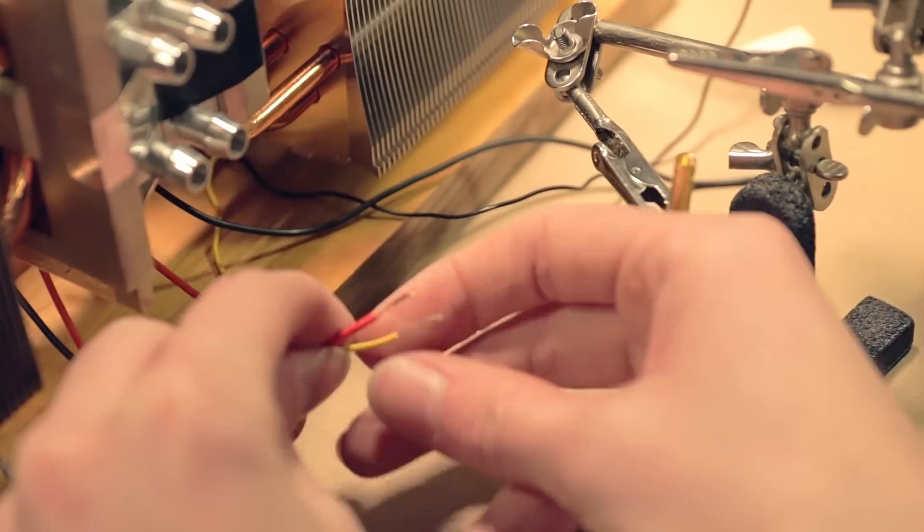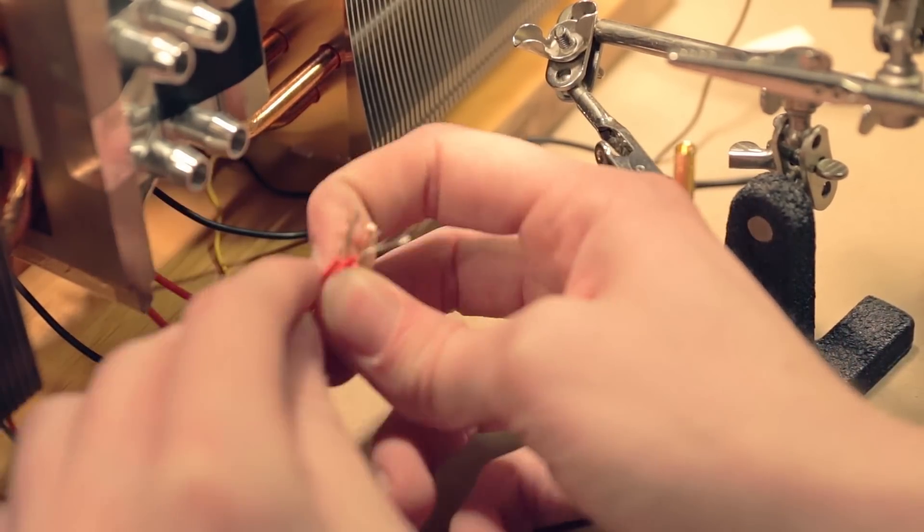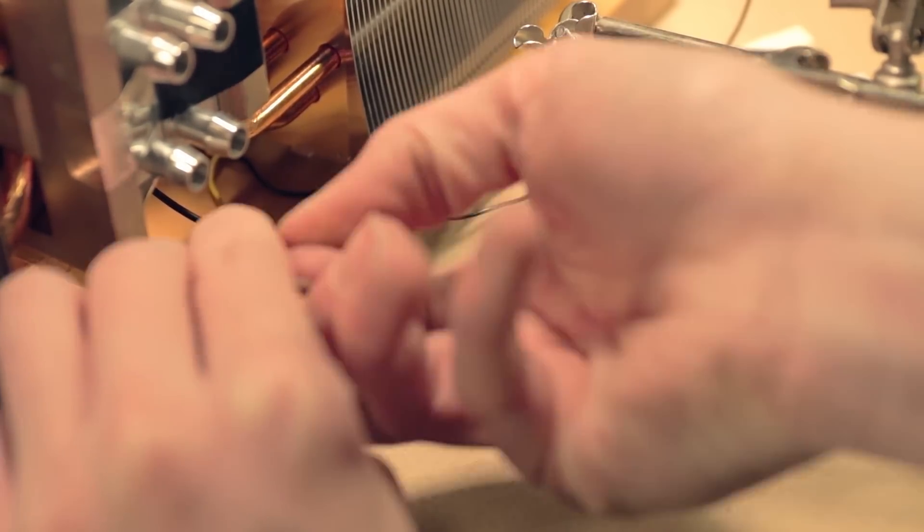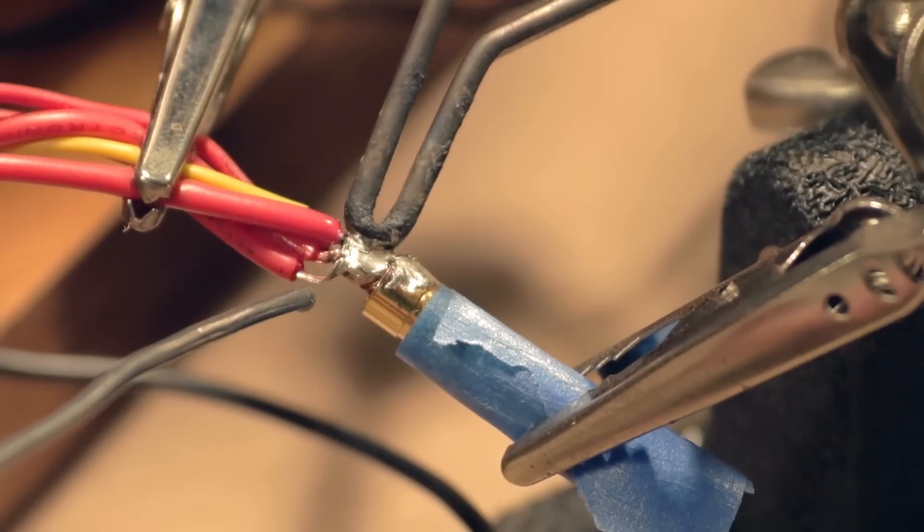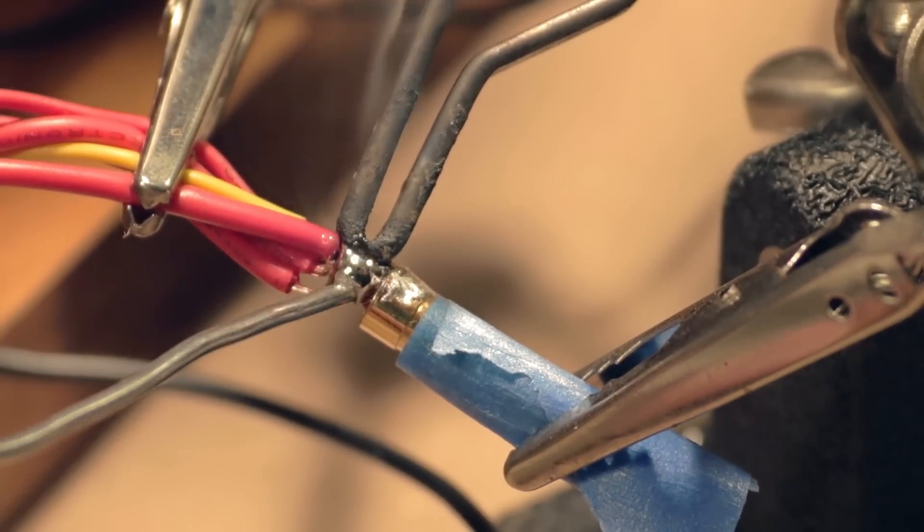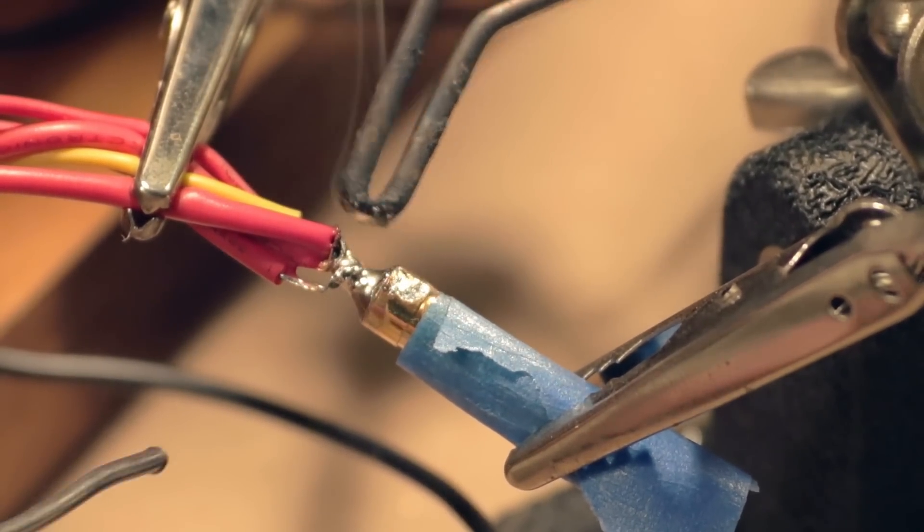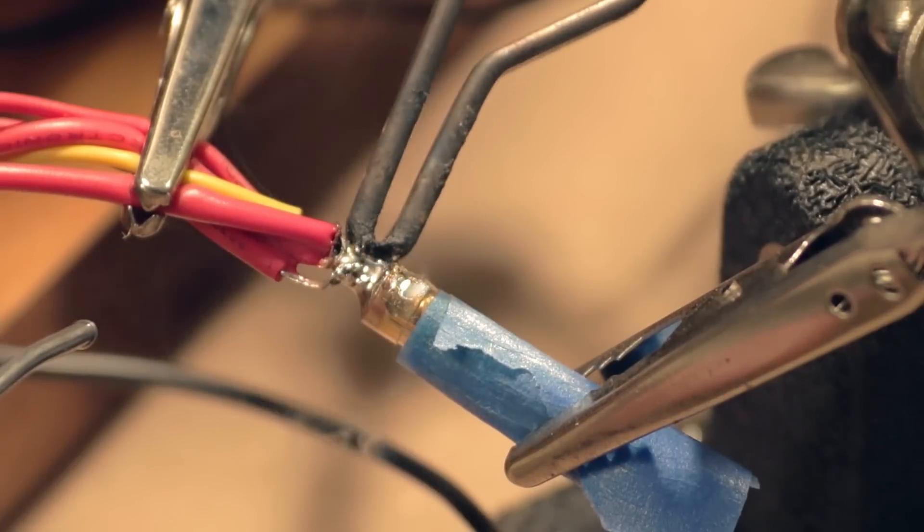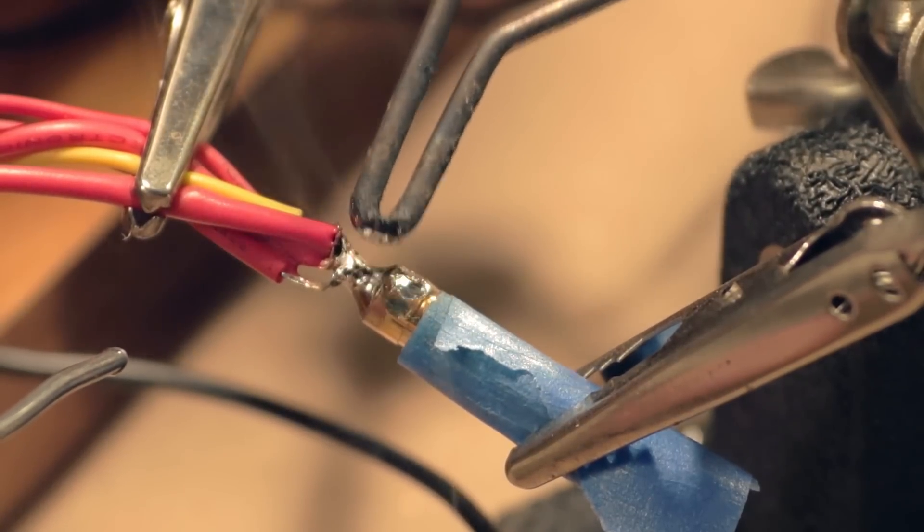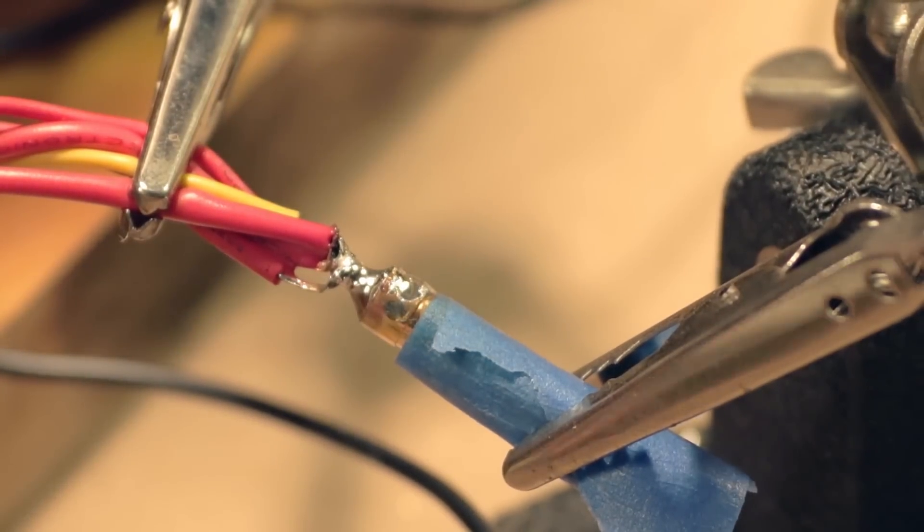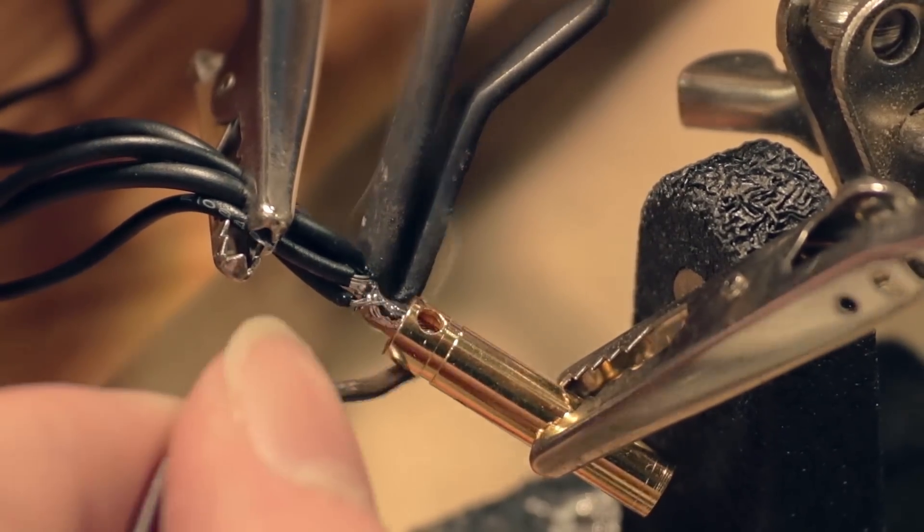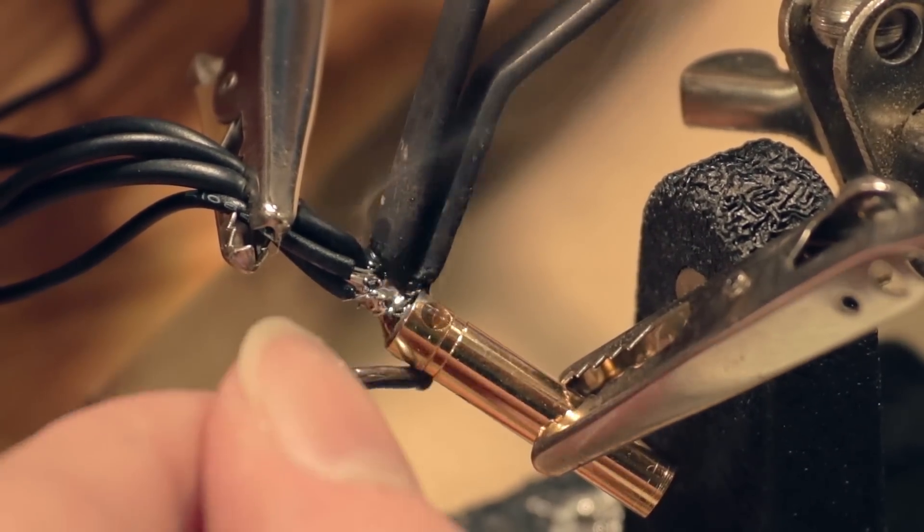At this point, I grabbed all of my positive wires and twisted all the frayed ends together, and then soldered it into an 8mm bullet connector. With the positive done, the process for the negative side is exactly the same. Just twist all the braids together and then solder them together into an 8mm bullet connector.